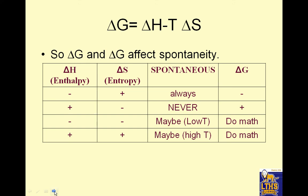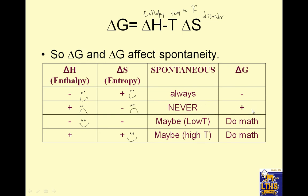Delta G equals delta H minus T times delta S, where delta H is enthalpy, T is temperature in Kelvin, and delta S is disorder. If enthalpy is negative, nature likes that. If entropy is positive — increasing disorder — nature likes that too. When both are favorable, the reaction is always spontaneous and delta G is negative. If enthalpy is positive and entropy is negative, nature hates both — it is never, ever spontaneous and delta G is positive.